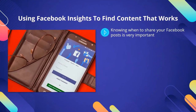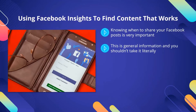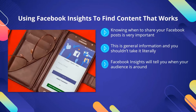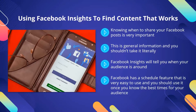Knowing when to share your Facebook posts is very important. There's been a lot of research in this area, and the outcome is that posting on Thursday through Sunday at 9 a.m., 1 p.m., and 3 p.m. are the best posting times. This is general information, and you shouldn't take it literally. These days and times may not be the best for your target audience. You need to find out when your audience is around and post at these times. Facebook Insights will tell you when your audience is online — under 'When Your Fans Are Online,' you will be able to see the most active days and times. Facebook has a schedule feature that is very easy to use, and you should use it once you know the best times for your audience.